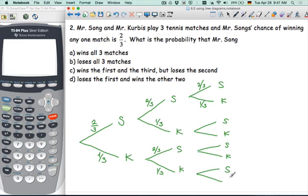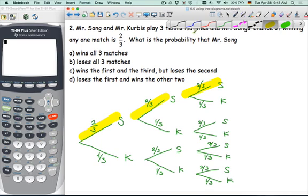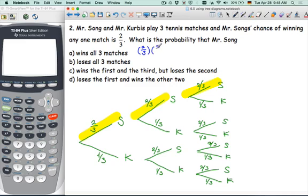Winning all three is not too hard, right? Mr. Song winning all three. As you get into C and D, you will really see the power of the tree diagram again. So you can see my chances will not be quite so good. However, Mr. Song's chances of winning all three matches would be winning, winning, winning. So two-thirds times two-thirds times two-thirds, because each game is independent of the game before. Eight over 27.